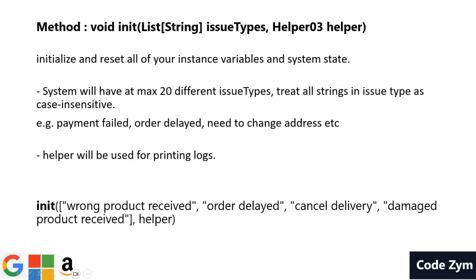Let's go through the first method. Init will be called only once per test case, so it is sort of our constructor. It has two variables: issue types and helper. Issue types is an array — the 0th element is wrong product received, one is order delayed, two is cancelled delivery, and three is damaged product received. Helper has methods helper.print and helper.println for printing logs. We will see how issue types is used in the upcoming section; basically only its indexes will be used.